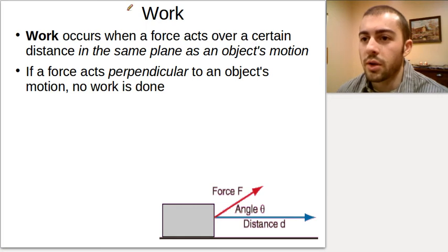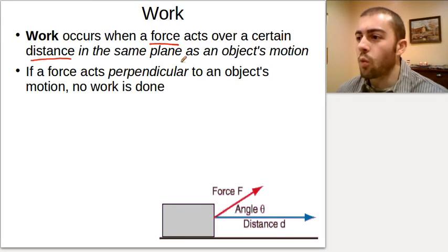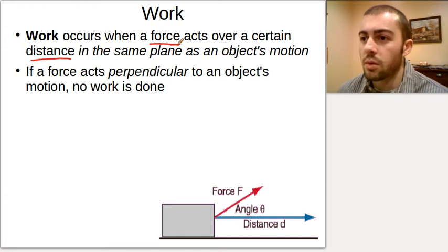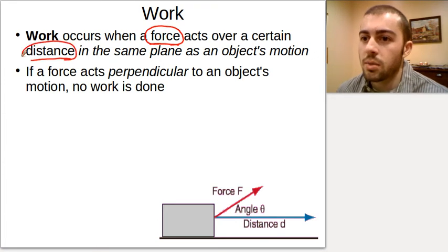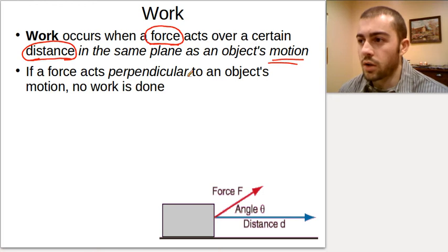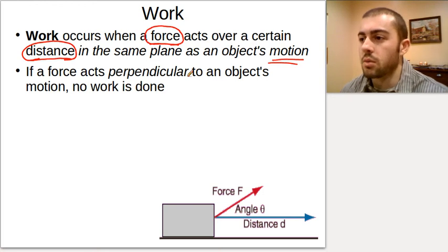Our definition is that work occurs when a force acts over a certain distance in the same plane as an object's motion. So in order for work to be done, we need two things: a force acting on an object, and motion — some distance to be covered. If a force acts on an object and it doesn't move, then there's no work done.